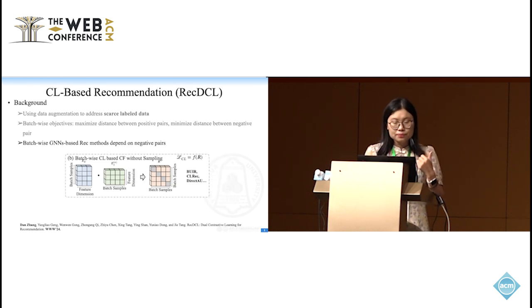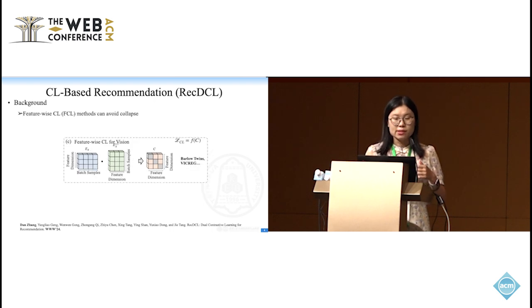For this work, we investigated some batch-wise approaches for contrastive learning methods, and we can see that if represented by direct AU methods, these methods directly use positive pairs to conduct the contrastive learning methods. However, this batch-wise contrastive learning methods we think can easily lead to trivial constant solutions, so we investigated the batch-wise or other contrastive learnings, mainly including batch-wise contrastive learning or feature-wise contrastive learning. We know that feature-wise contrastive learning rotates the batch-wise on the user and item representation metrics, and we see that feature-wise contrastive learning methods can avoid the collapse.